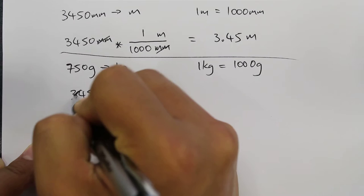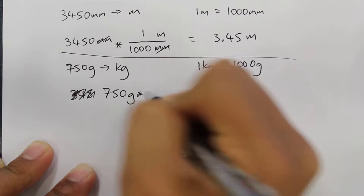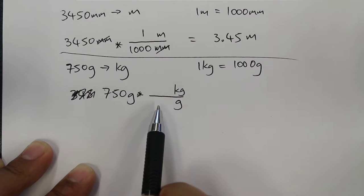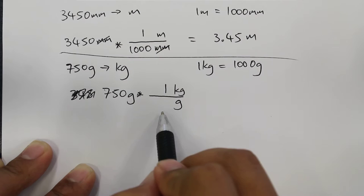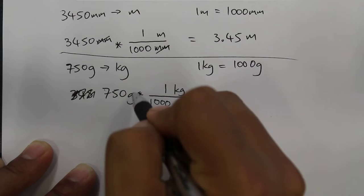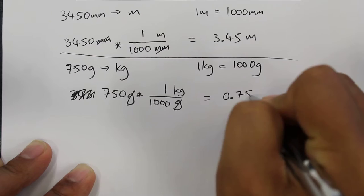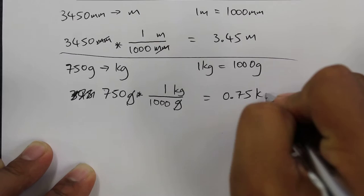So over here we can write down 750 grams. We want to multiply by a number where we have the grams unit on the bottom and the kilogram unit on the top. And we want these two numbers to be the same. So what I mean is the number on the top, 1 kg, is equal to 1000 grams. The grams units will cancel and we can deal with the unit numbers. So 750 times 1 divided by 1000, we get 0.75 and the unit that we're left with is the kilogram.